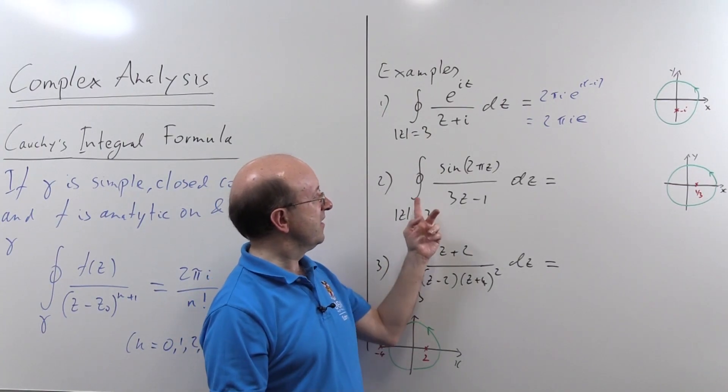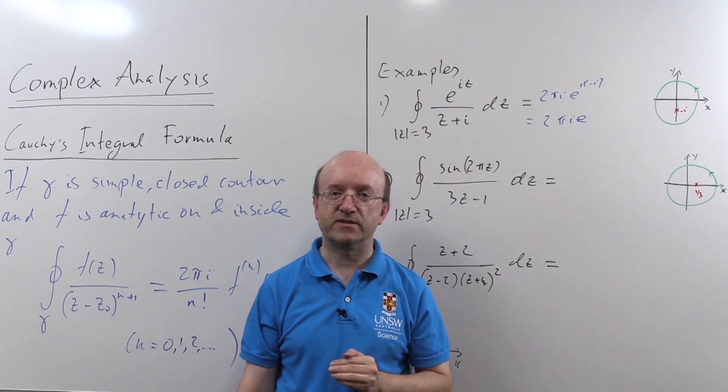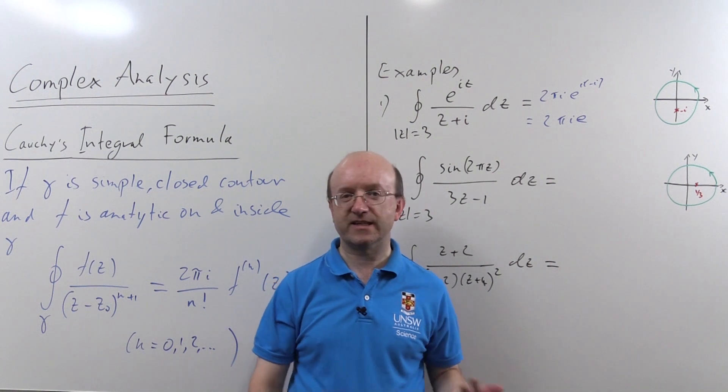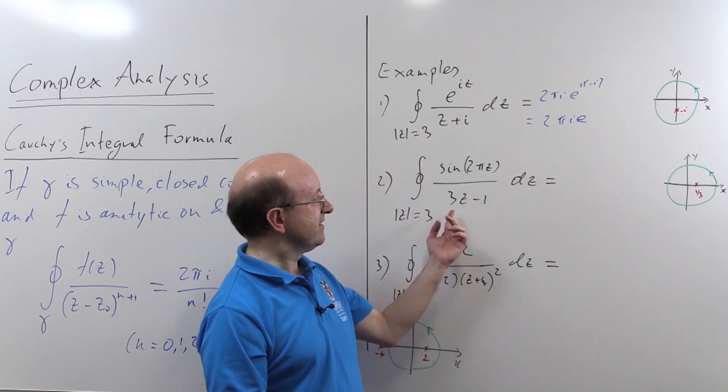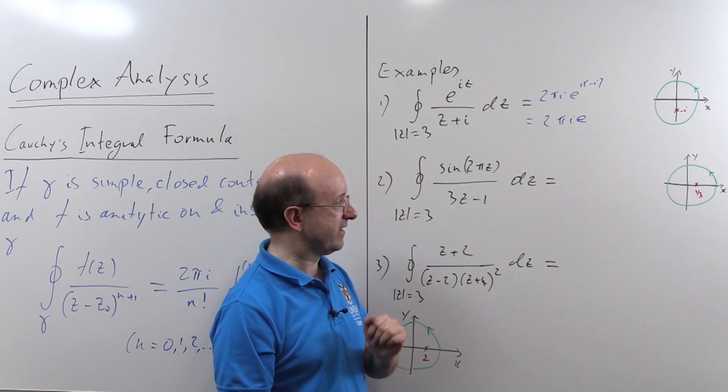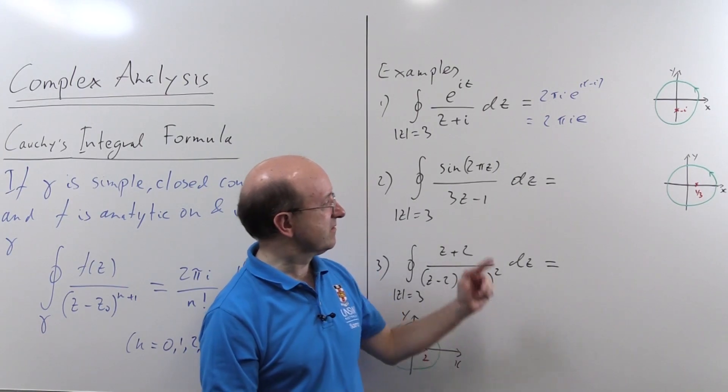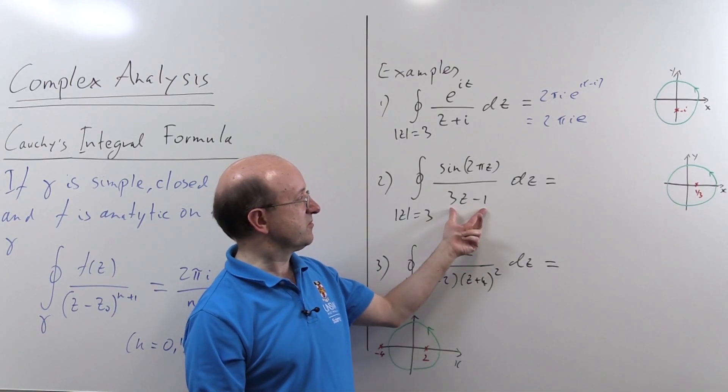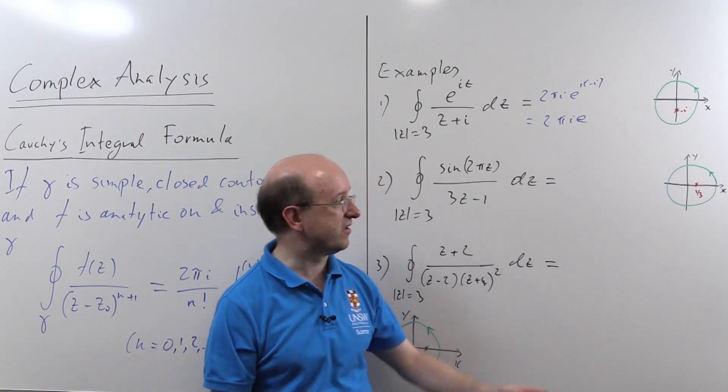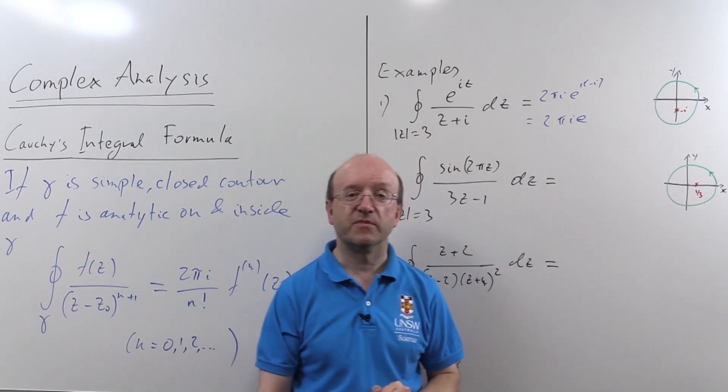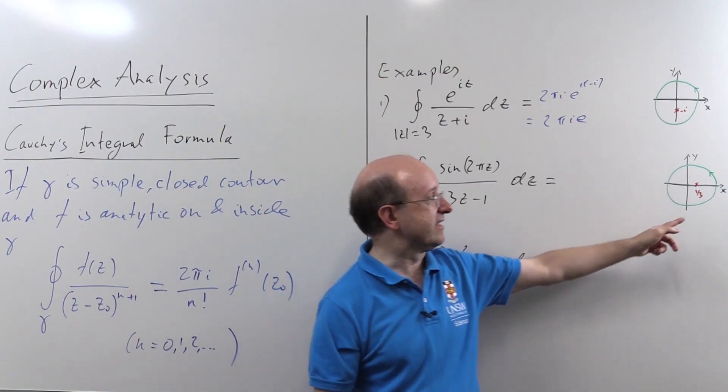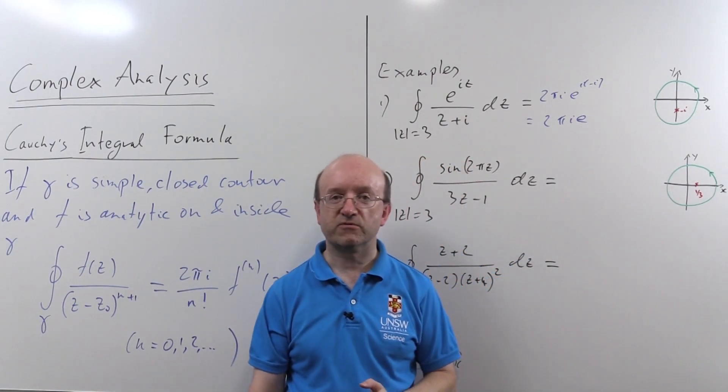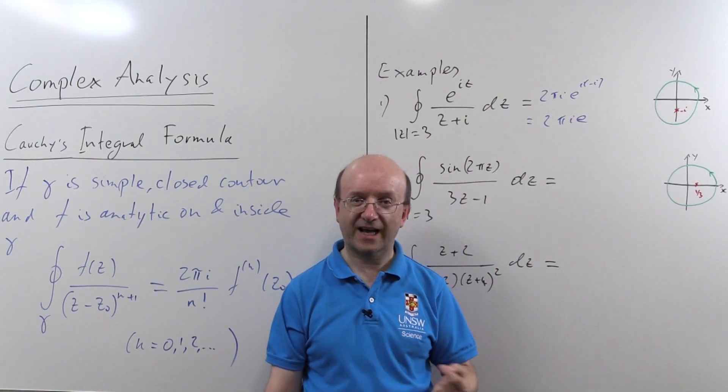In my second example, we're integrating sine 2 pi z. Well, again, that's not a problem. It's analytic everywhere. 3 z minus 1 is 0 when z is a third, which is what I've drawn in my little diagram here. And again, the contour mod z equals 3, assume taken once anticlockwise.